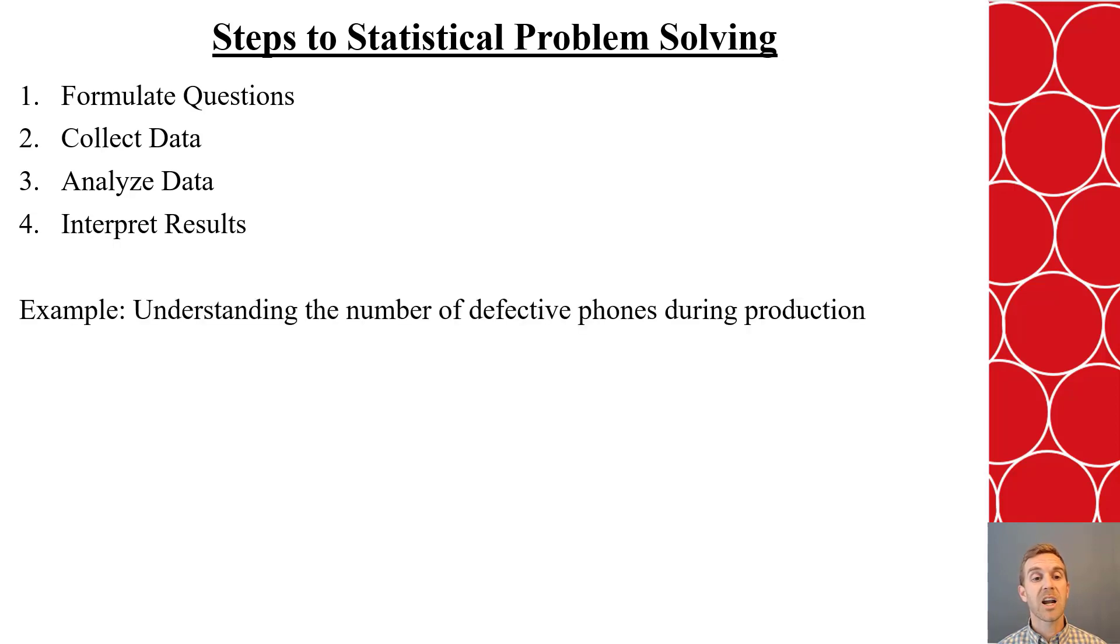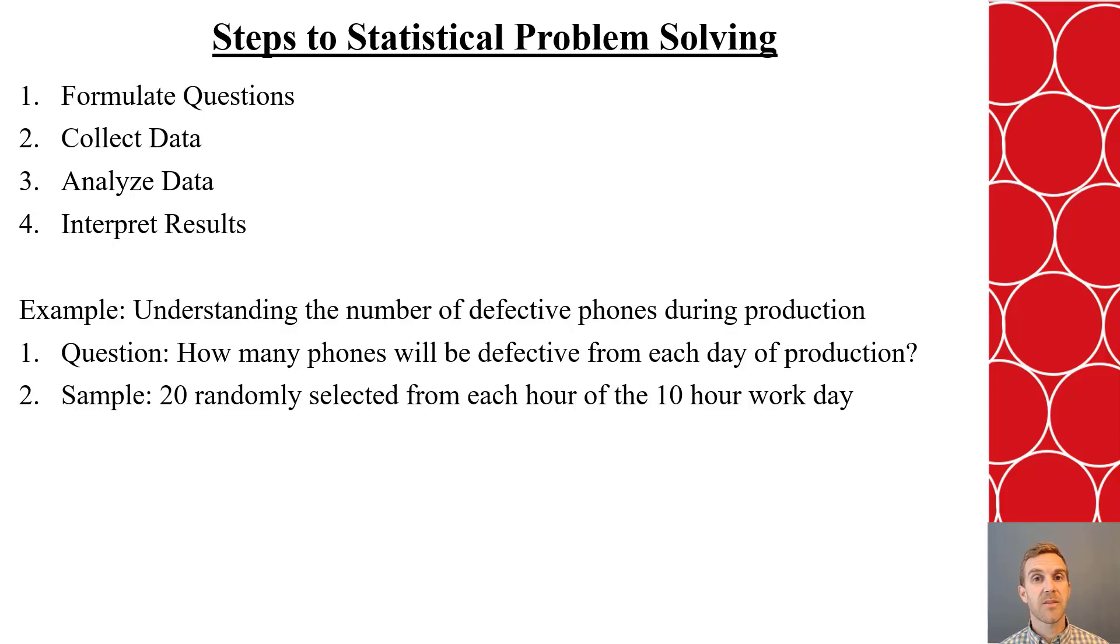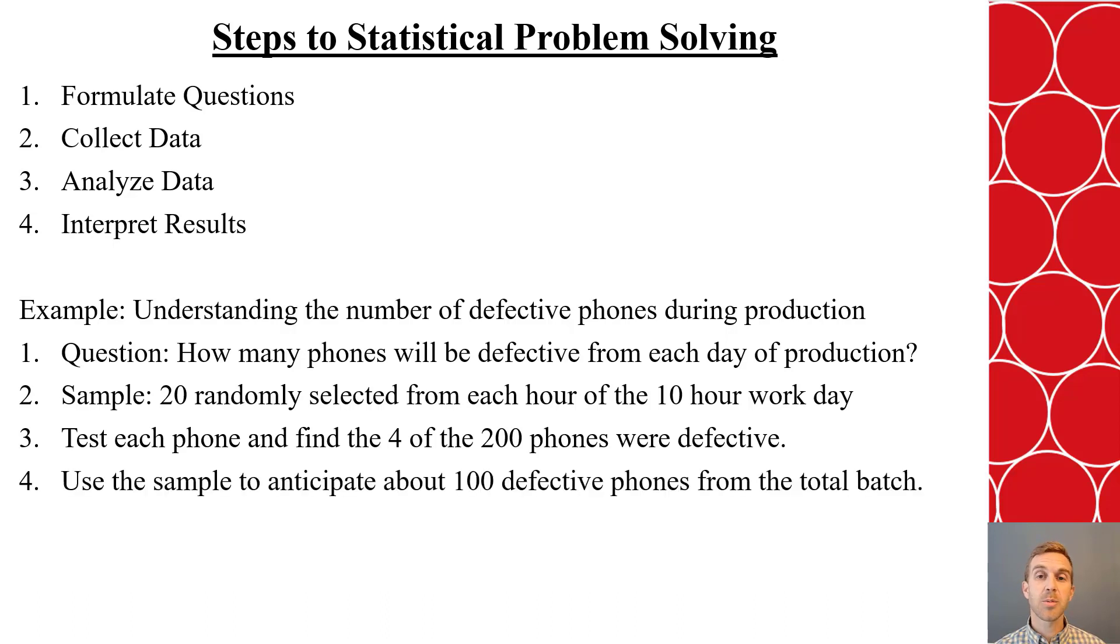So, think back to our previous example. A company is trying to understand the number of defective phones during production. The question they ask is how many phones will be defective for each day of production. To collect the data, they did a random sample. Maybe they used a form of a stratified random sample, where they said they're going to select 20 phones randomly each hour of a 10-hour workday, hence the 200 phones. Once they have their sample, they're able to analyze it and determine that 4 of those 200 phones are defective. Using that information, they can then interpret that to the population to determine that there's likely going to be about 100 defective phones from the total batch of phones being produced each day. So, putting this information together allows them to use the sample to better understand what's happening during production and then they can make better choices about what to do as a company either to improve that or to how to make even something like their warranty.